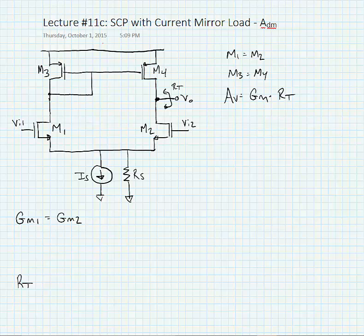Here we're taking our output node between transistors M2 and M4, and this is a high impedance node, unlike the diode connected node between M1 and M3.